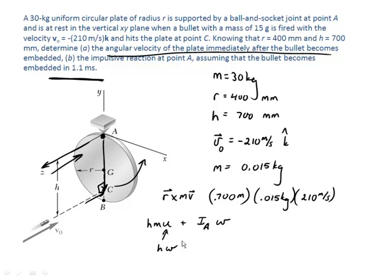Or more precisely, U will be equal to H times omega as far as the bullet is concerned. Because the bullet is going to have the same omega as the plate. But it's a distance H away from point A. So that's going to be H times omega.